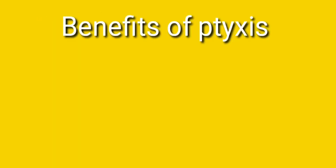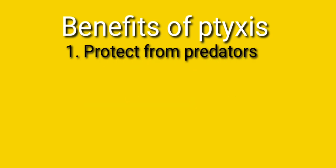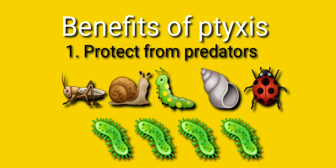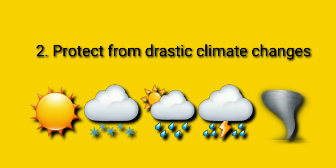And what is the benefit of Ptyxis? Ptyxis helps to protect the young leaf from predators like insects, animalcules, and microorganisms. It also helps the young leaf to protect from drastic climate change. If the climate is too sunny or too cold, the young leaf is unable to survive because it contains immature cells. So this covers the types and benefits of Ptyxis.